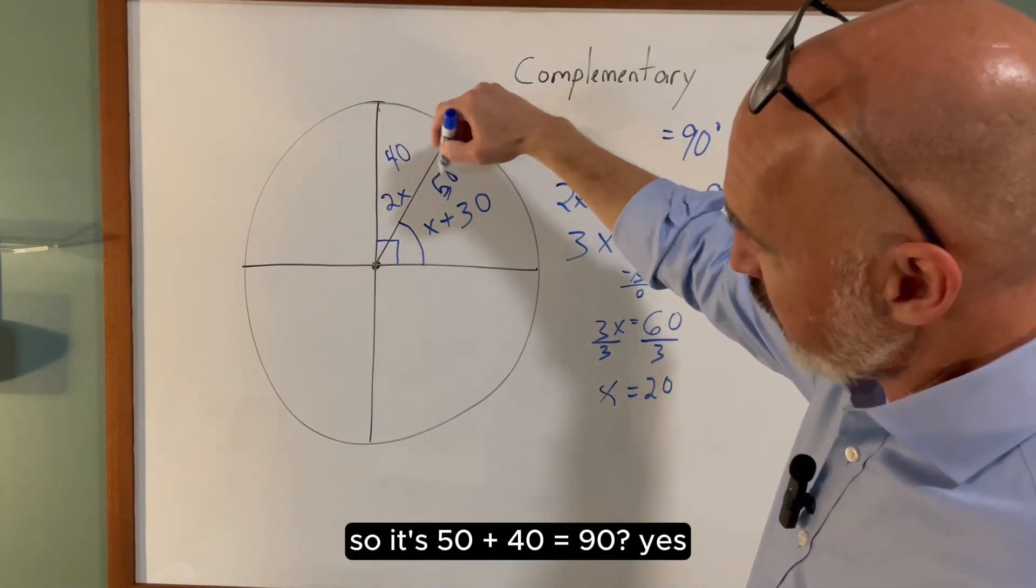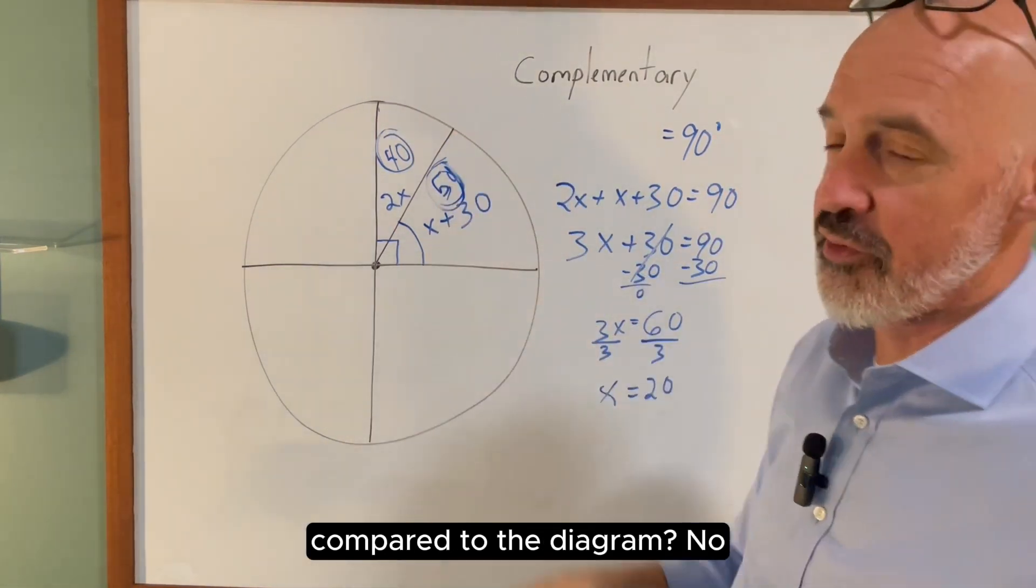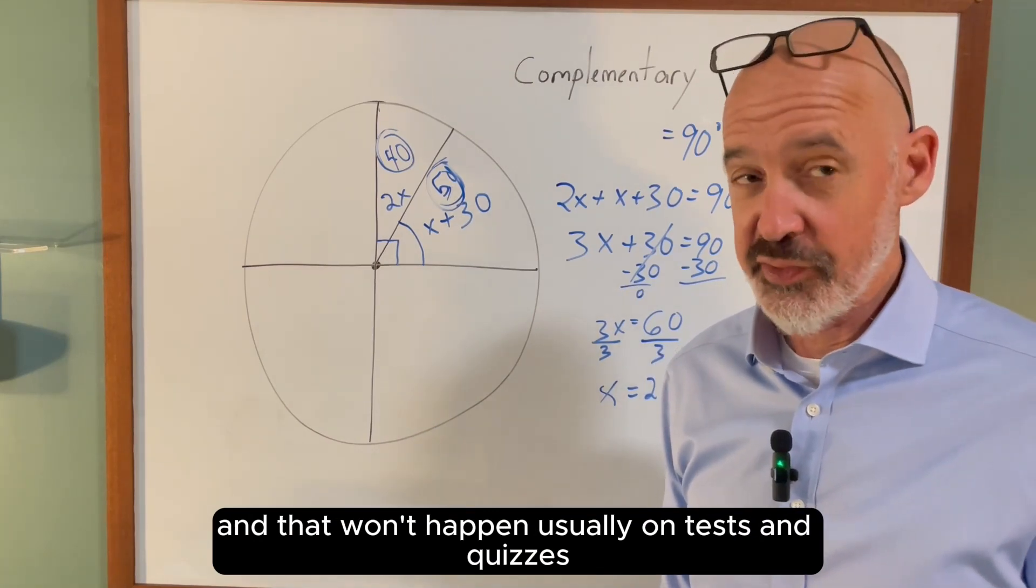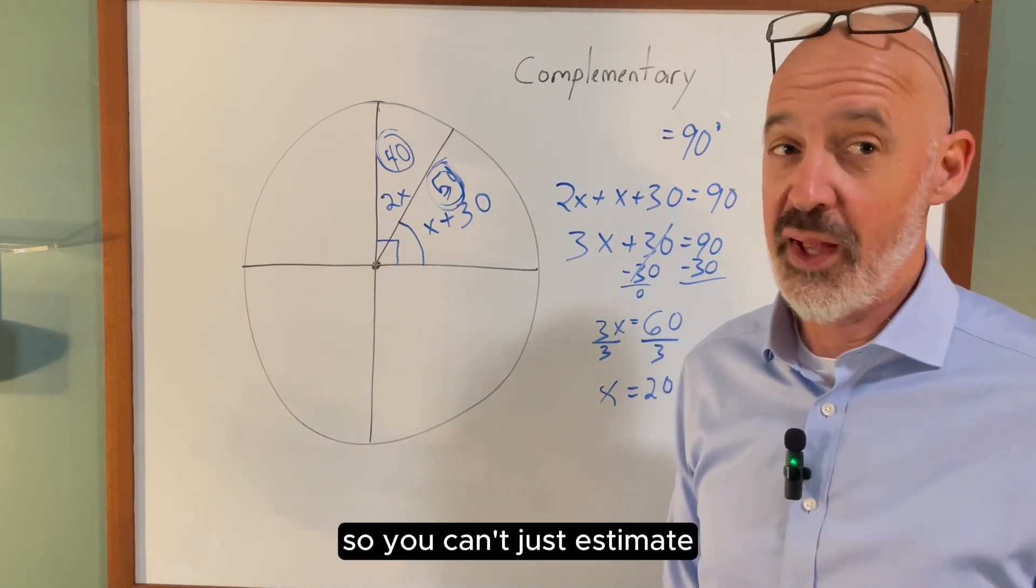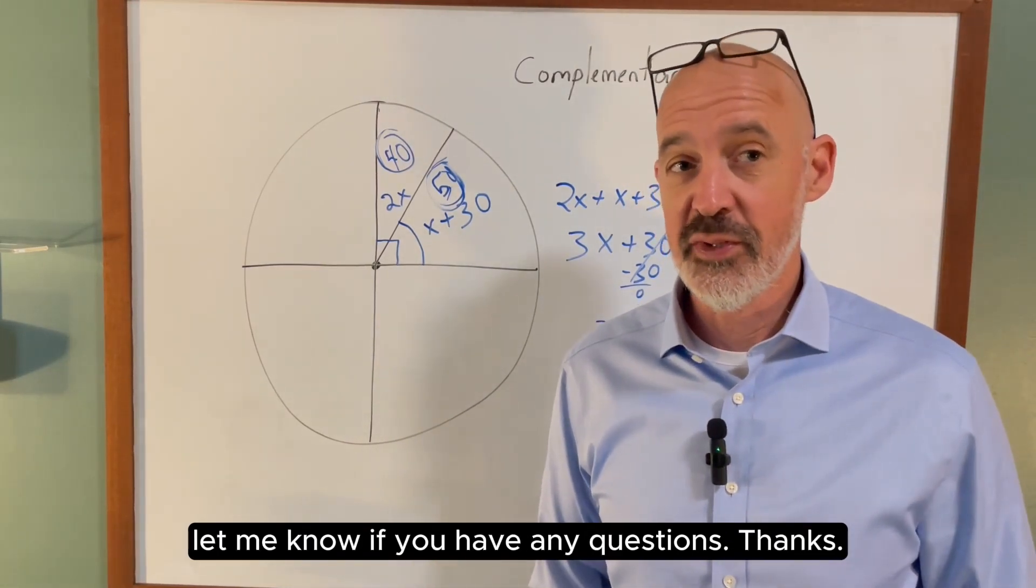So is 50 plus 40 equal to 90? Yes. These angles look perfectly accurate compared to the diagram? No, and that won't happen usually on tests and quizzes, so you can't just estimate—you've got to do the math. Hope this helps. Let me know if you have any questions. Thanks.